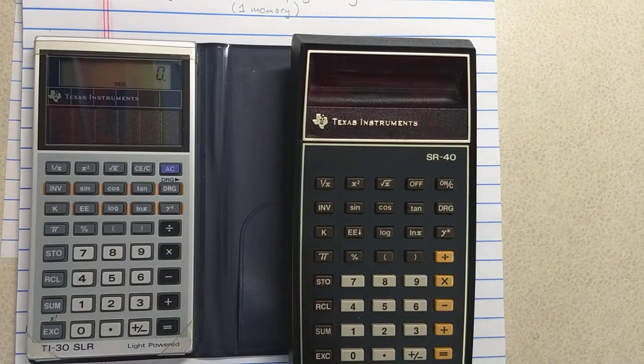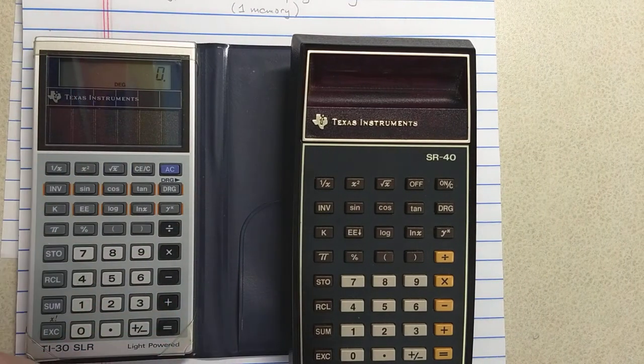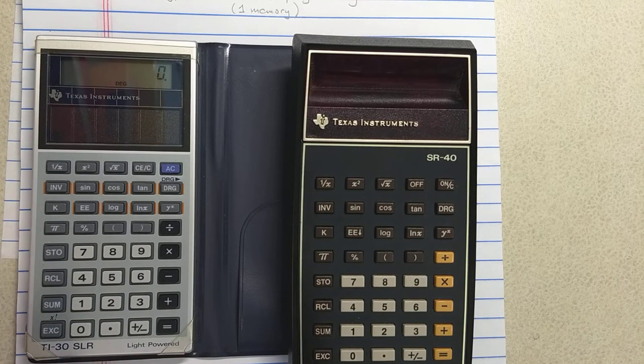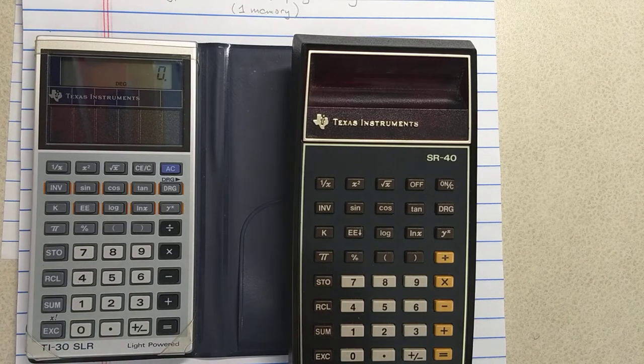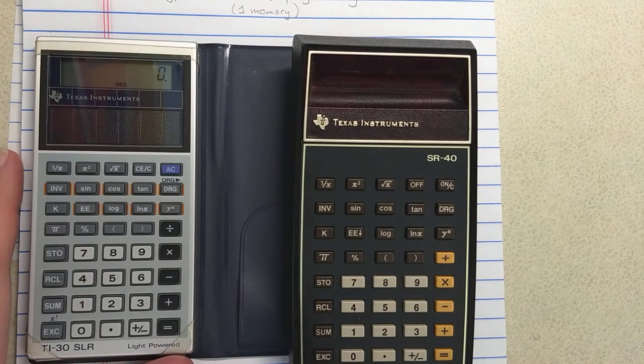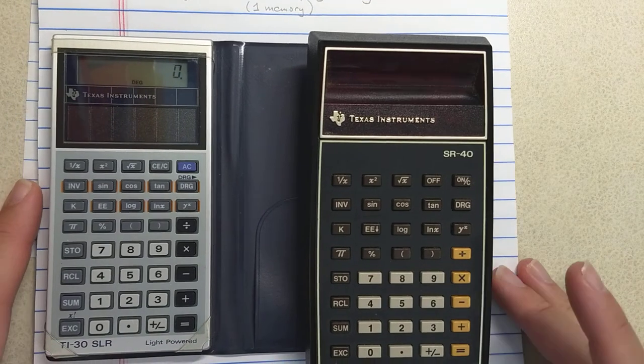There are other calculators called the TI-30 with multi-line screens. I don't really consider those real descendants of the TI-30 except in name. Okay, so it's 1976. The TI-30 comes out. Why does it kill slide rules?